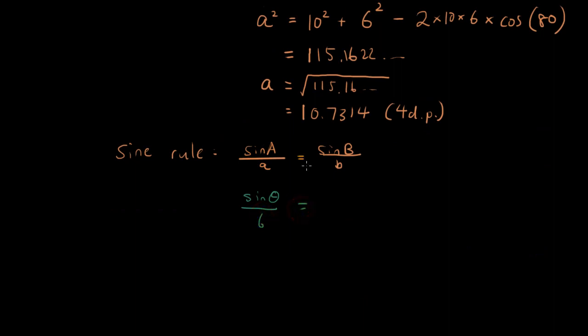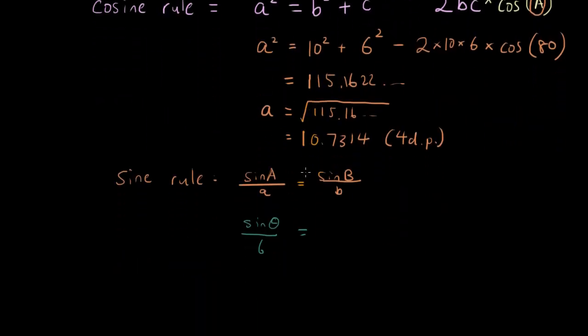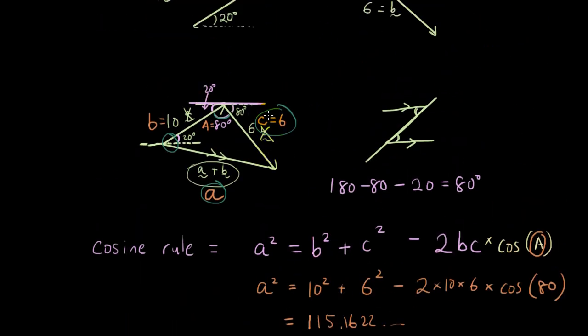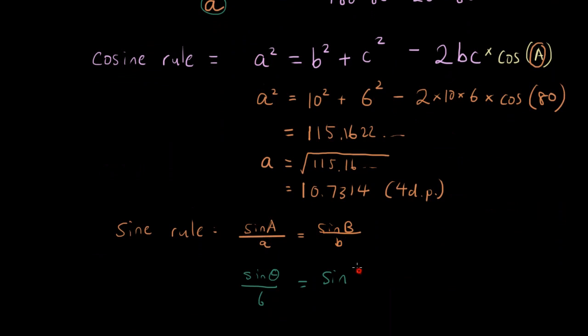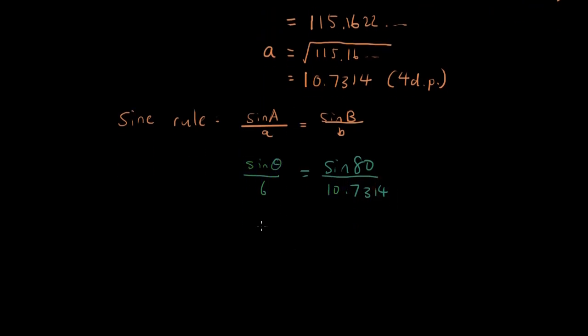And the side length is c. So 6 divided by sine b. So this angle we already know. And this side we already know. Because we found it before. So we've got sine of the angle, which is 80. And the side length here is 10.73. So we just need to rearrange this equation to find out what theta is. So sine theta equals sine 80 over 10.7314 times 6. And sine theta equals all of that inverse. So what is that in the calculator?